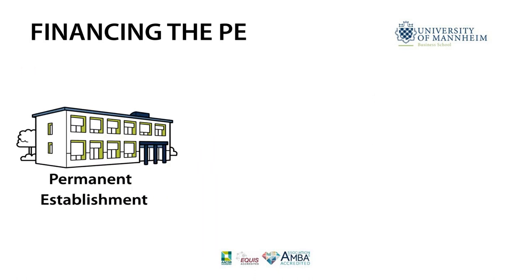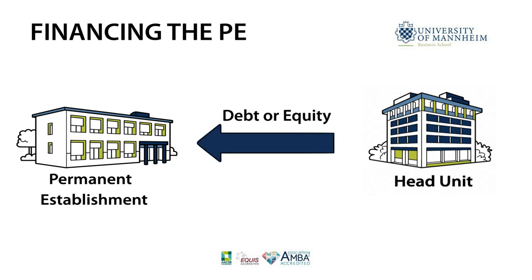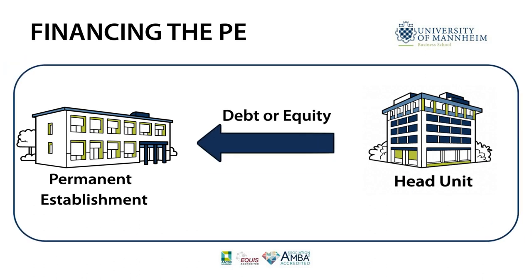A permanent establishment can be financed by debt or equity. Since it is not considered a separate legal entity, financing contracts with the head unit are not possible. Instead, the head unit allocates debt and equity capital to the permanent establishment in order to finance its business.